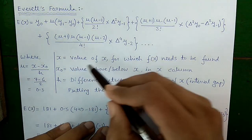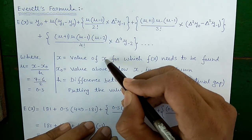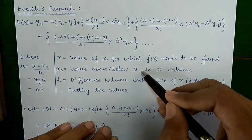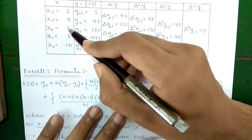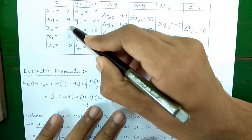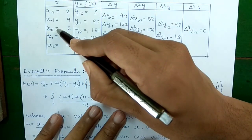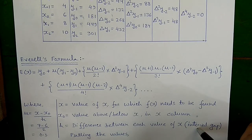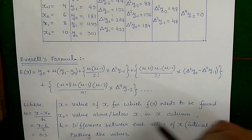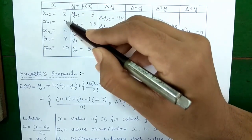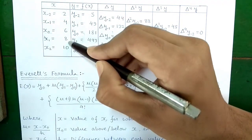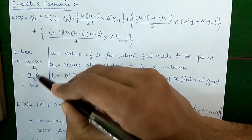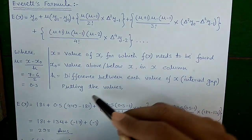We need to find f of x for x equal to 7, so x is 7. x₀ is the value just above x in the x column; since x is 7, the value above 7 in the table is 6, so x₀ is 6. h is the difference between each x value, which is 2. Therefore, u = (x − x₀)/h = (7 − 6)/2 = 0.5.